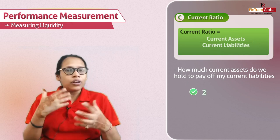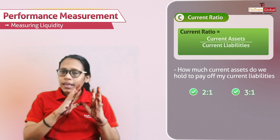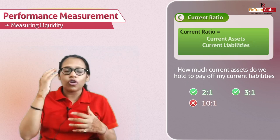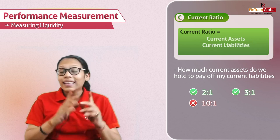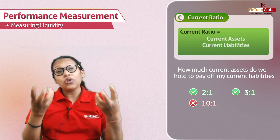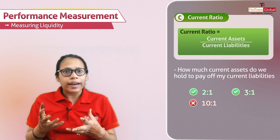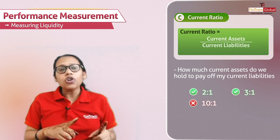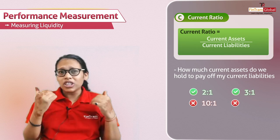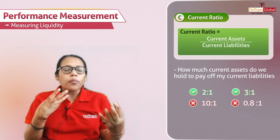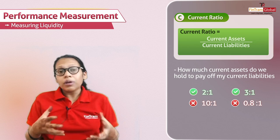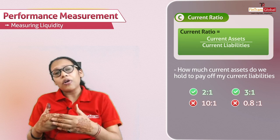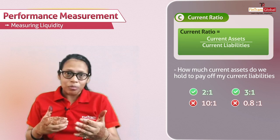If the current ratio is two-to-one or three-to-one, it's good for the organization. But it should not be too high — like ten-to-one — because in that scenario, you are holding too much in current assets compared to current liabilities, blocking your funds and not investing efficiently. If it's too low, like 0.8 or 0.5, that is also not good because your solvency position is weakened and you don't have sufficient funds to pay off your current liabilities.